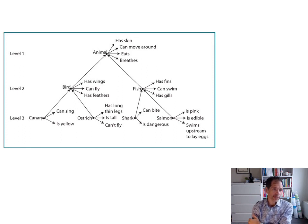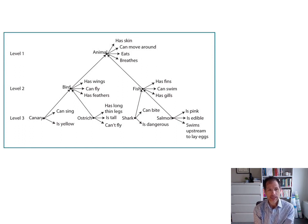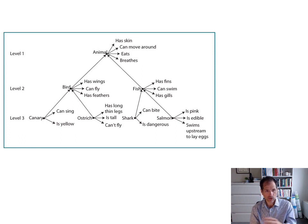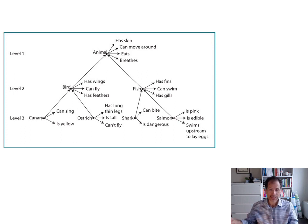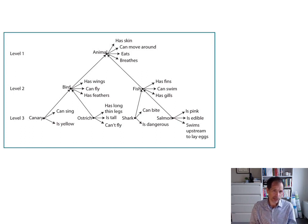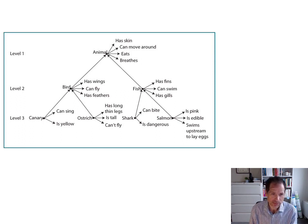Other properties of this hierarchical structure: everything that's true of animal — so has skin, can move around — is true of everything that is subordinate to it: birds, fish, ostriches, and salmon. All of these things have that property, and they can inherit those properties.